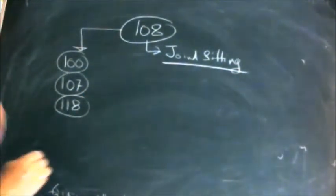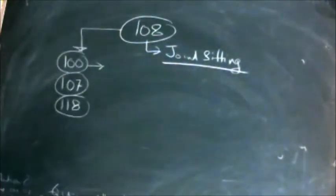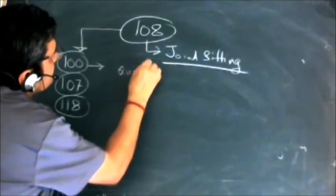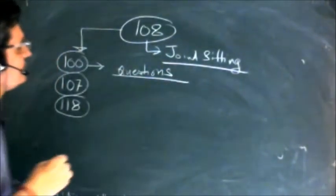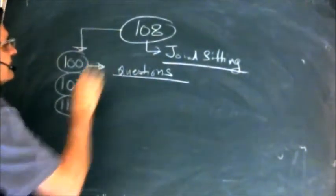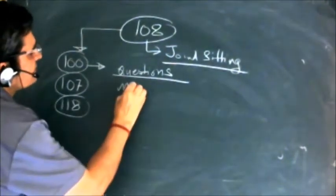Article 100 says that all the questions - it uses the word questions and it includes everything, passing of the bill is covered here - in the houses shall be decided by the majority of the members present and voting.